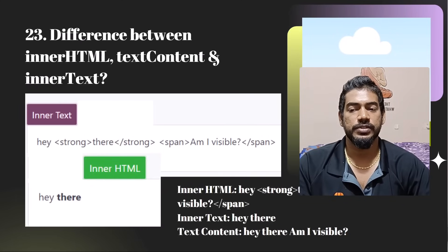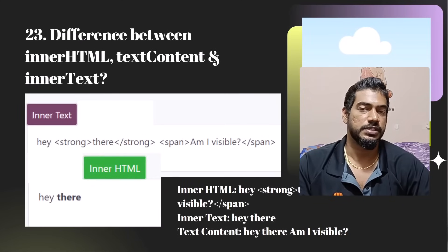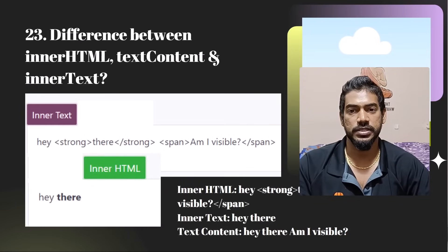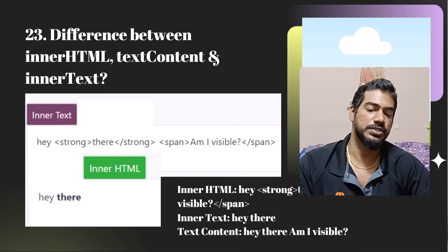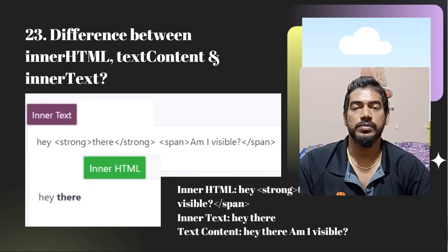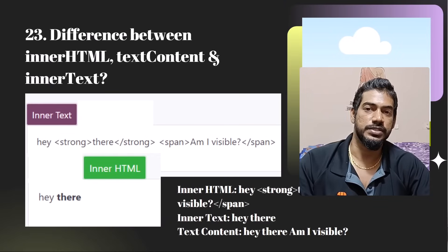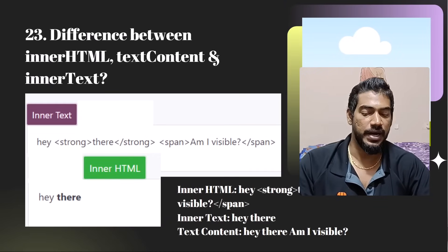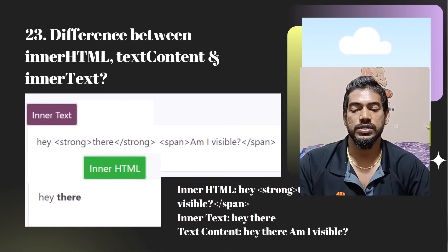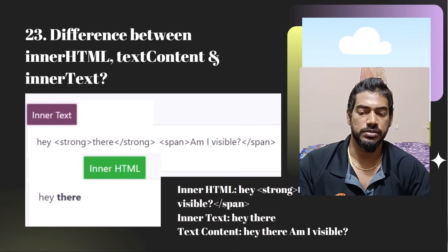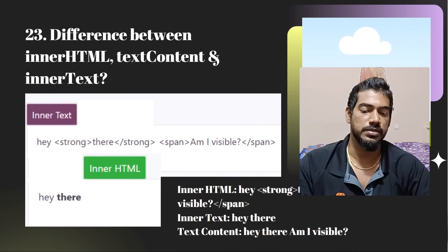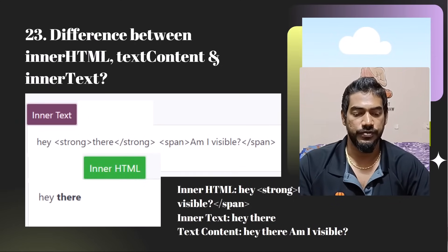What is the difference between innerHTML, textContent, and innerText? I have a dedicated video for this. In simple terms: innerText returns the text that is visible; textContent returns the text including invisible parts; innerHTML also gives you the styling and HTML formatting — for example, tags like strong are included in the output.